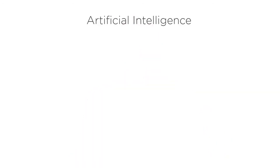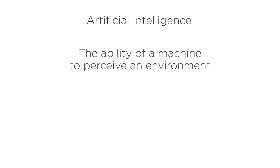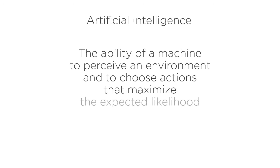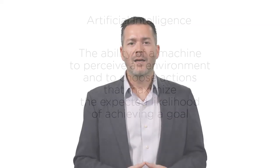More precisely, artificial intelligence is the ability of a machine to perceive an environment and to choose actions that maximize the expected likelihood of achieving a goal. We refer to this as the rational agent approach to defining artificial intelligence.